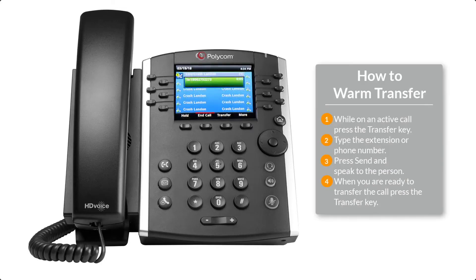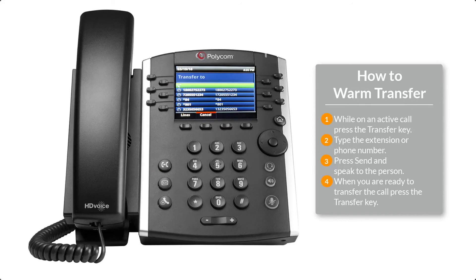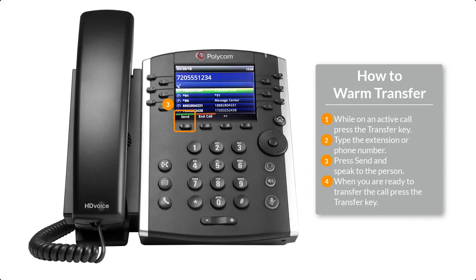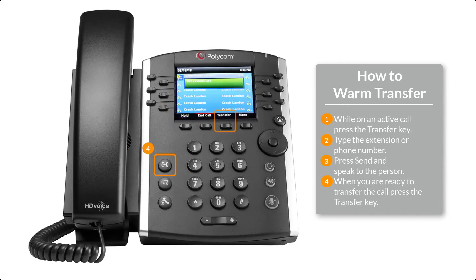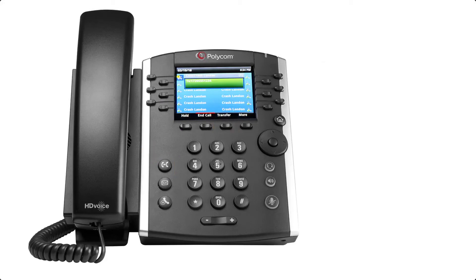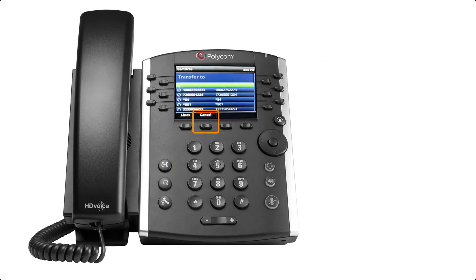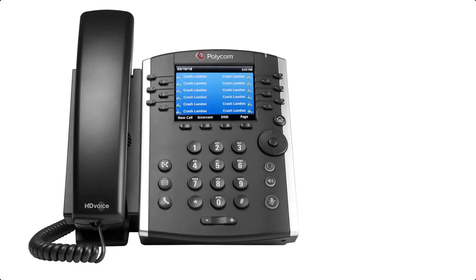To facilitate a warm transfer, you will need to be on an active call. Press the transfer key, then type the extension number or phone number you would like to transfer to. Press send and wait for the agent or person to pick up. When you are ready to transfer the call, press transfer, or to stop the transfer and go back to the original caller, press cancel. It is important to remember not to press hold first.